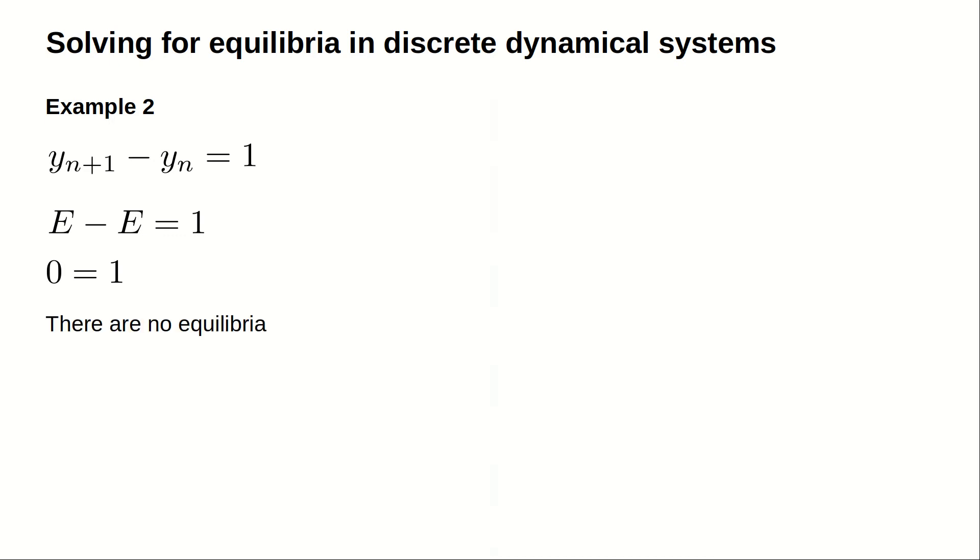The dynamical system has no equilibria. That makes sense. We are adding the number 1 at each time step, so there is no way to have a constant solution.